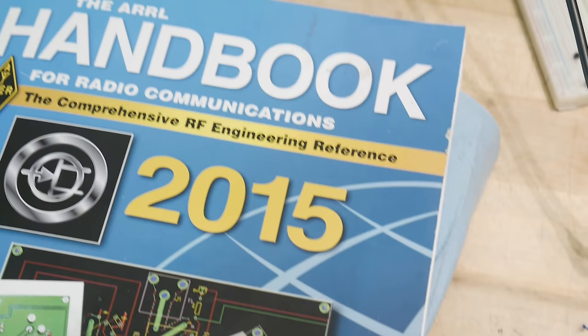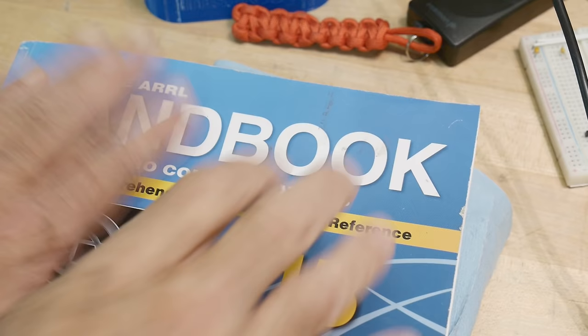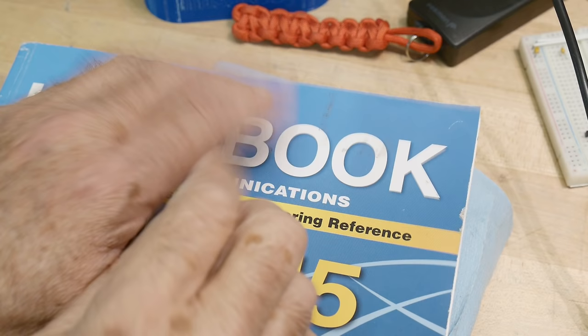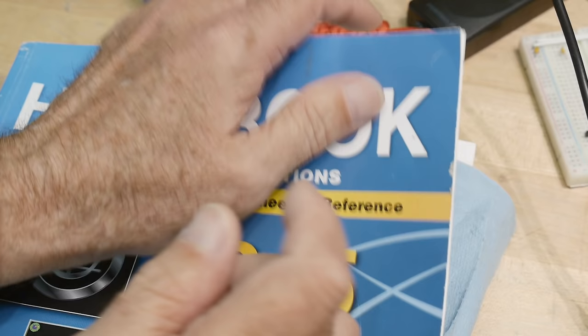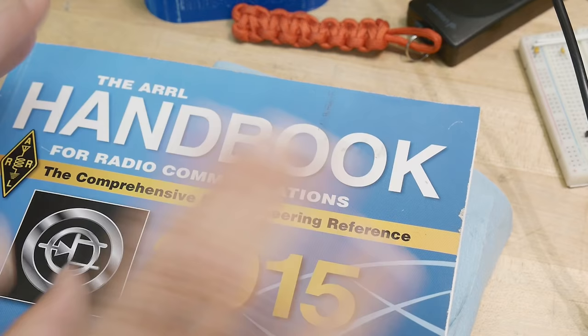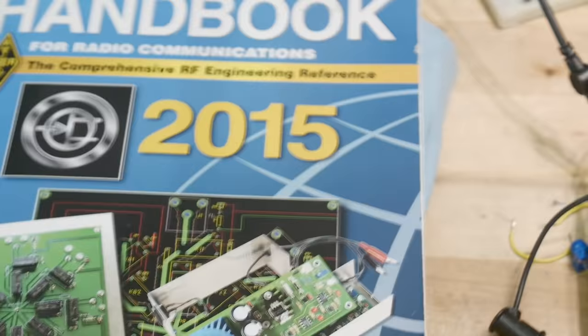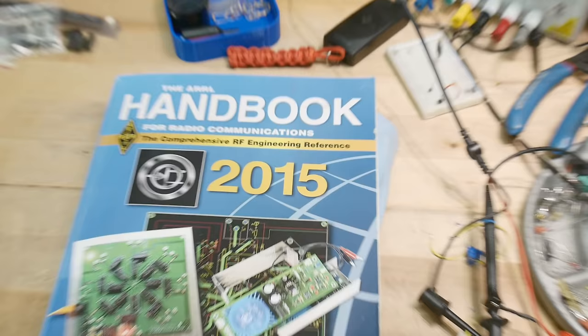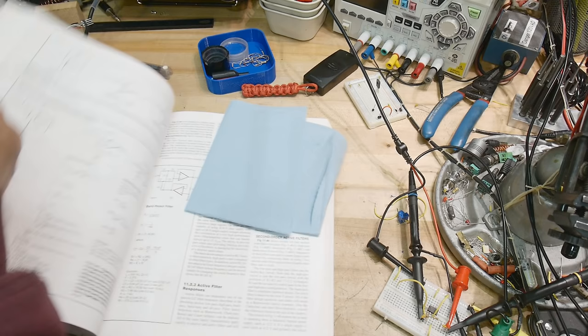I've showed this book before. It is the ARRL handbook. This is a great book, very inexpensive on the used market, and it has a whole bunch of great stuff in here. What I want to do today is pick something out and show you what I did, how I learned.